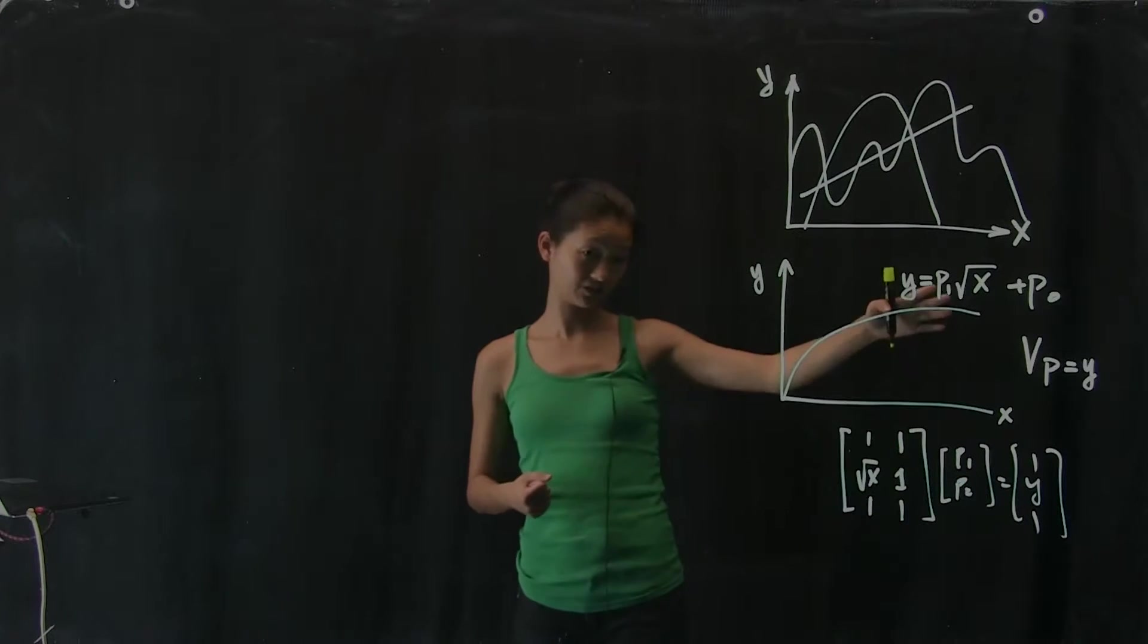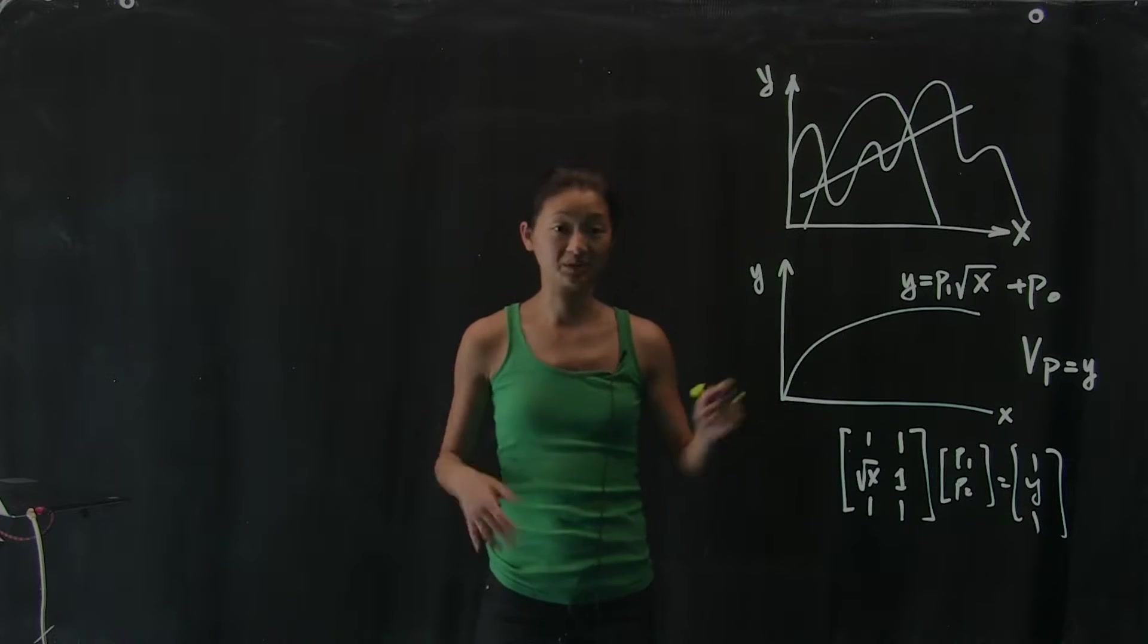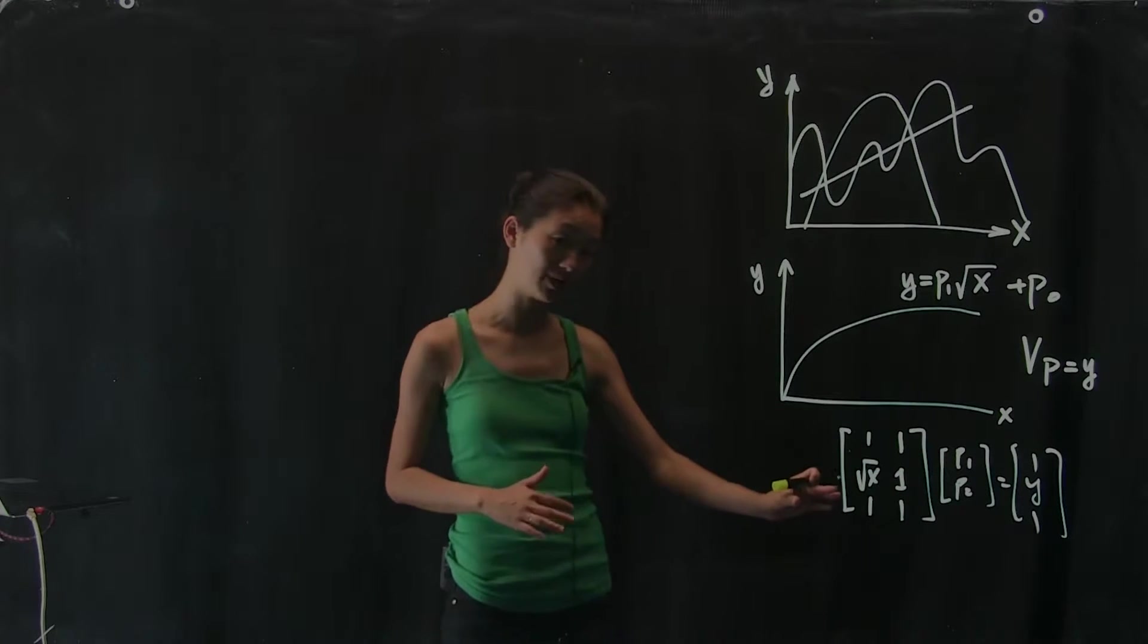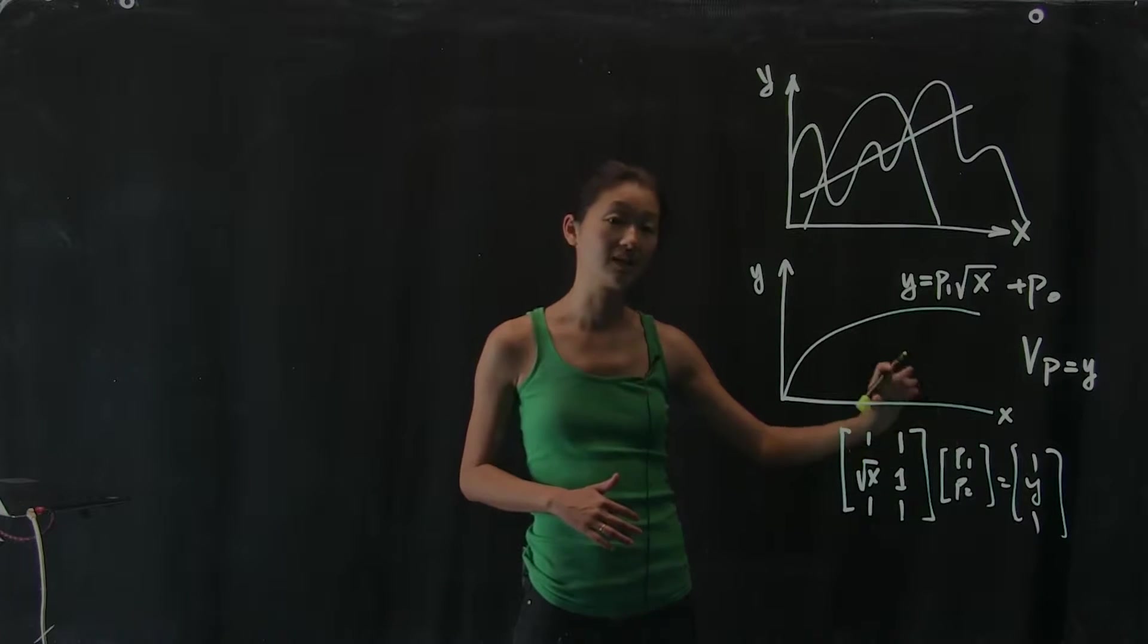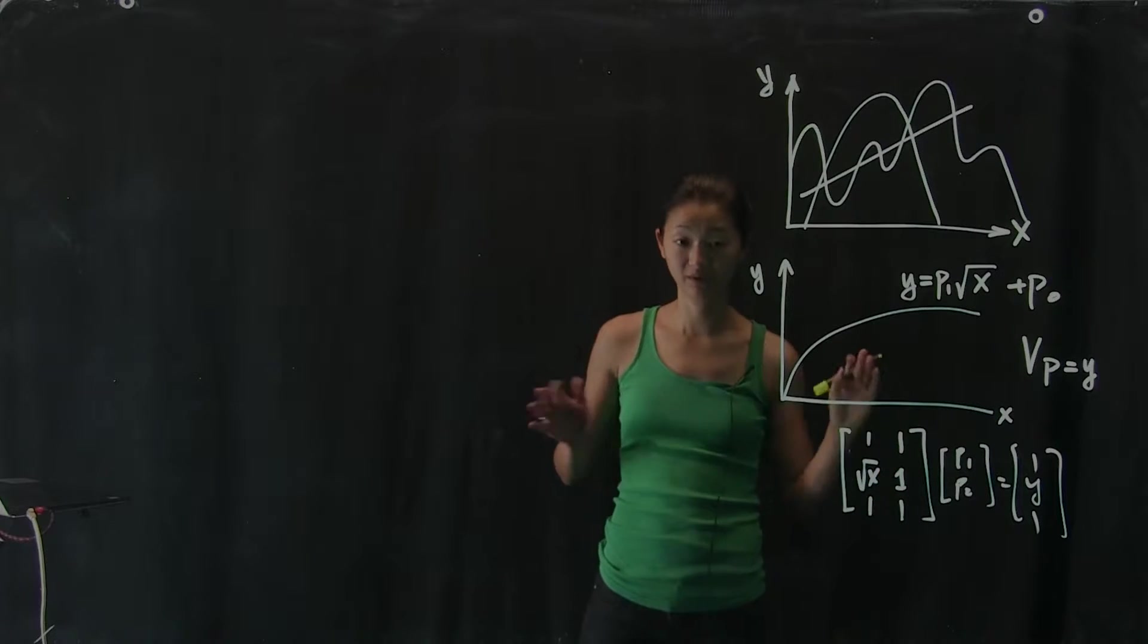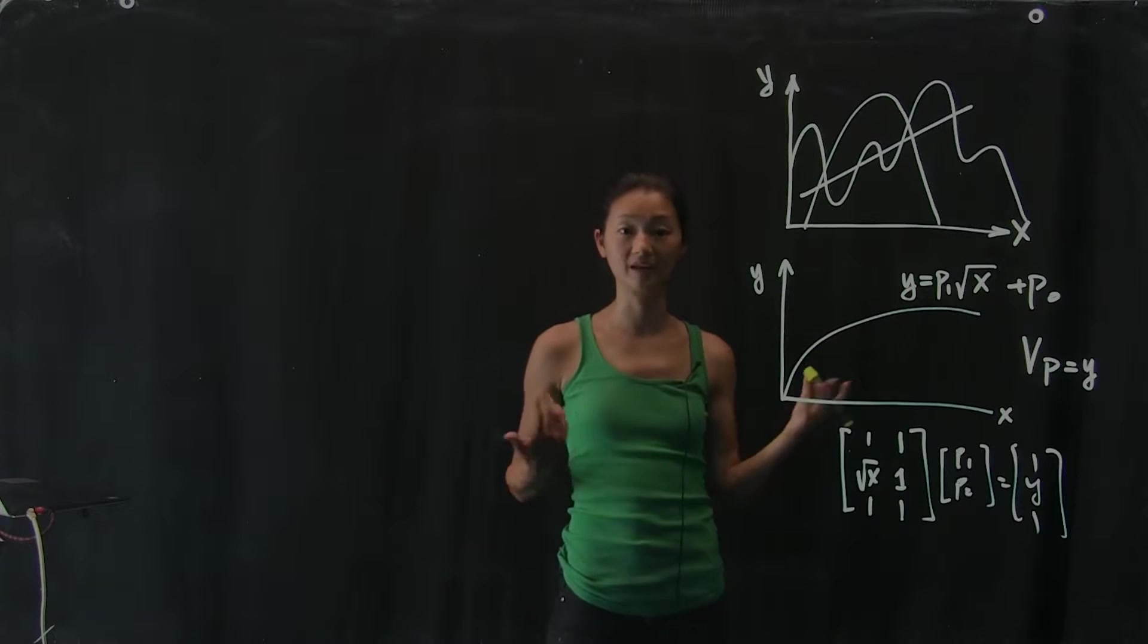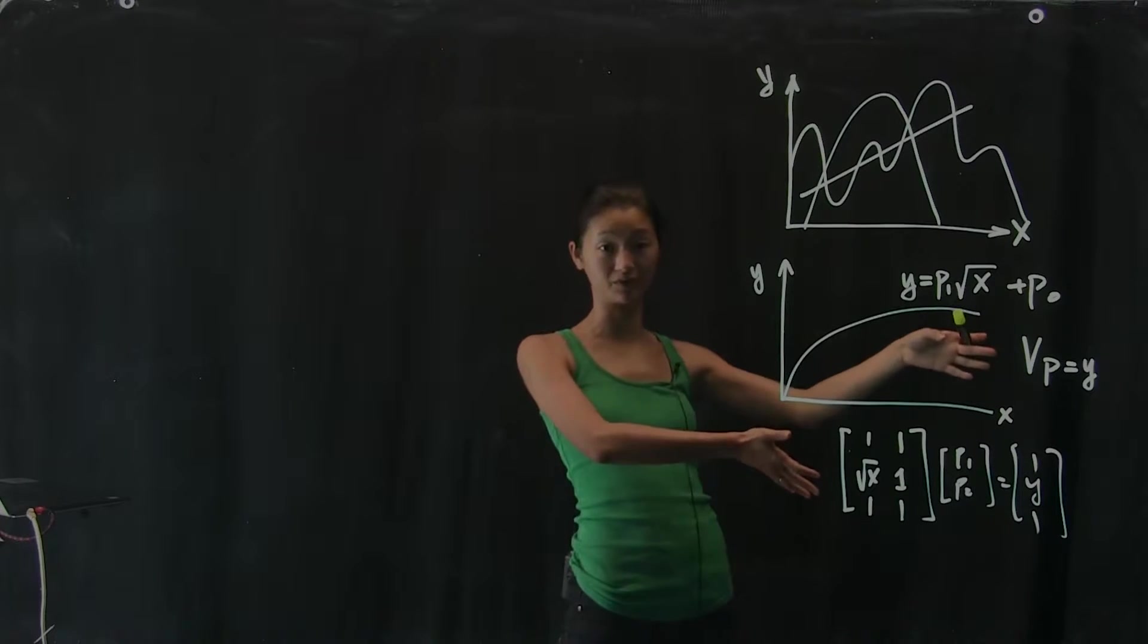So you can imagine that this doesn't have to be a square root. It could be, you know, the log of something. That works exactly the same. And as long as you understand the framework of how to construct this v matrix so that the resultant system of equations gives you the solution to p, then you can solve it using exactly the same framework. So I'll leave you as an exercise to try to figure out how you would do this if the function is y as a function of log of x instead.